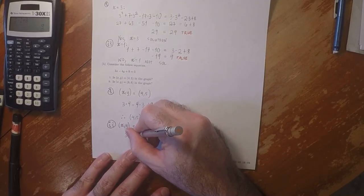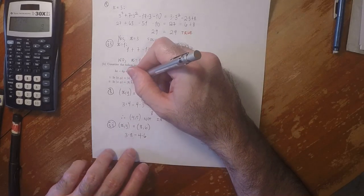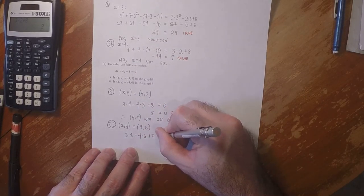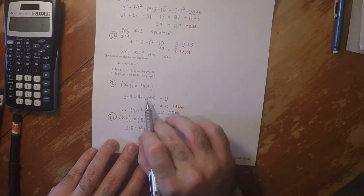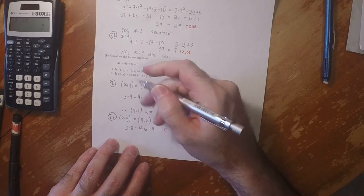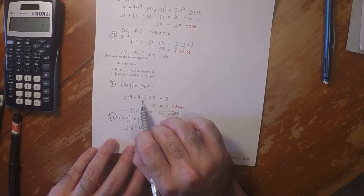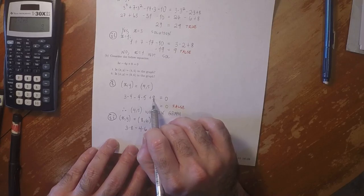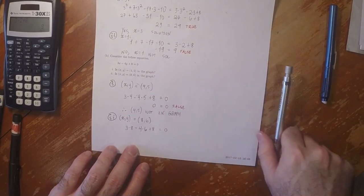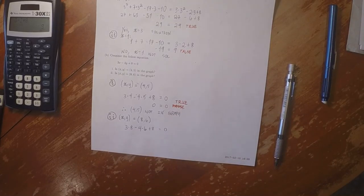3 times 8 minus 4 times 6. 3 times 8 minus 4 times 6 plus 8 equals 0. Oh, wait a second. This is 4 times 5. So rather, this is 12 minus 20, and then plus 8. So this is 0 equal to 0. So this one is true. So that means that 4, 5 is in the graph.